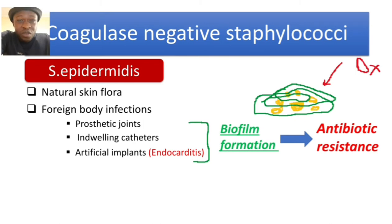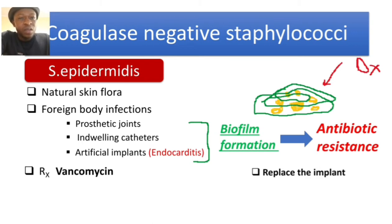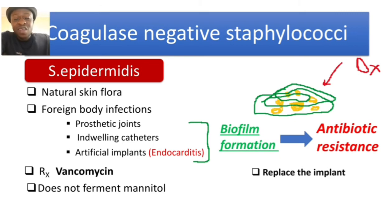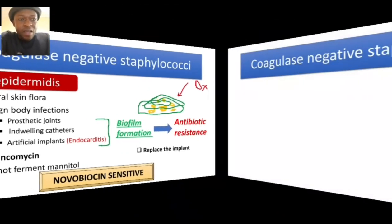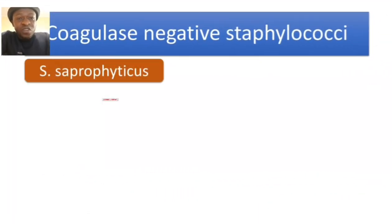For treatment we can use vancomycin, but the best approach is to remove and replace the implant. A bonus point is that Staphylococcus epidermidis does not ferment mannitol — in the previous video we compared Staph aureus, which ferments mannitol, versus other species which don't. Most importantly, the way to differentiate Staphylococcus epidermidis from Staphylococcus saprophyticus is using the drug novobiocin: Staphylococcus epidermidis is novobiocin sensitive, unlike Staphylococcus saprophyticus which is novobiocin resistant.